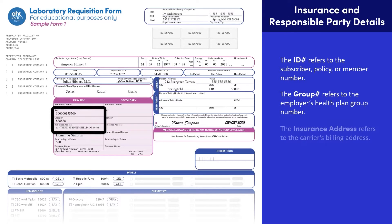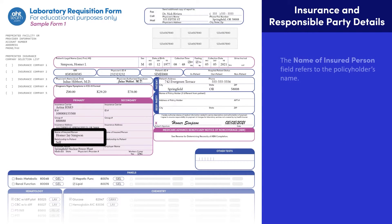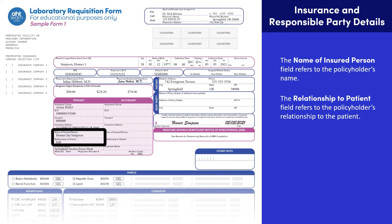The ID refers to the subscriber, policy, or member number commonly found on the front of the insurance ID card. The group number refers to the employer's health plan group number. If the policyholder is not part of their employer's group health plan, a group number may not be present on the card. The insurance address refers to the carrier's billing address commonly found on the back of the insurance ID card. The name of the insured person refers to the policyholder's name, and the relationship to patient field refers to the policyholder's relationship to the patient.